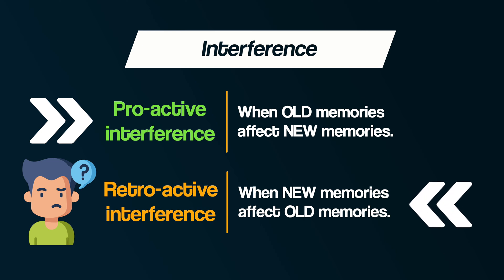A simple way to remember these two types of interference is to think that proactive interference — P — is where past memories interfere with the new learning. And then retroactive interference — R — is where recent learning interferes with the old information.